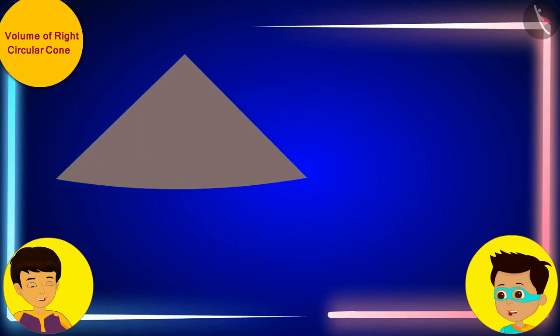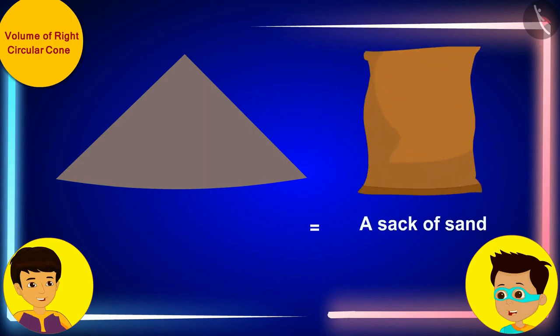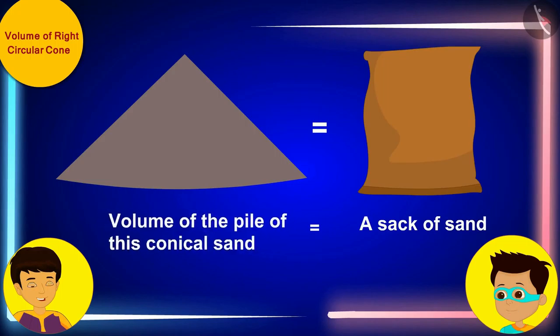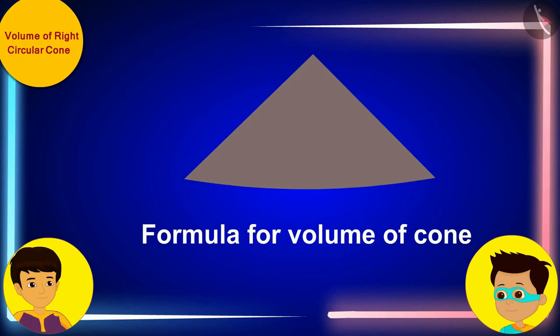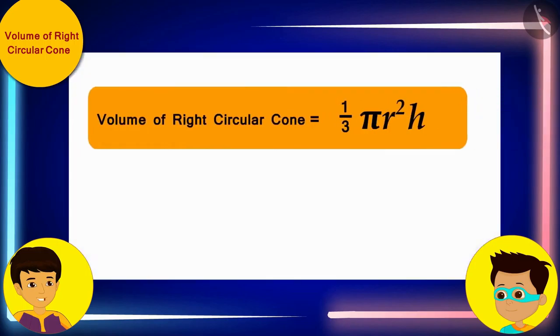And you already know that the space enclosed by any object is equal to its volume. This means that the amount of sand in this pile, or in other words, a sack, is equal to the volume of the pile of this conical sand. I remember the formula for the volume of a cone. The volume of any right circular cone is one-third the product of pi square of r and h, where r is the radius of the base of the cone, and h is its height.